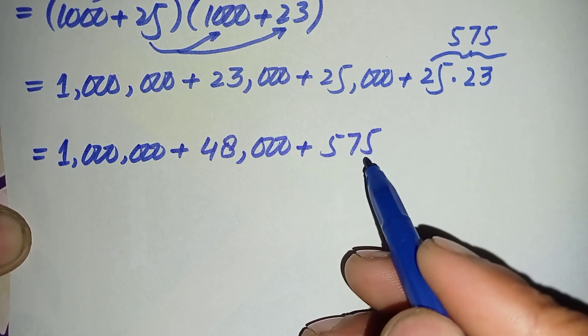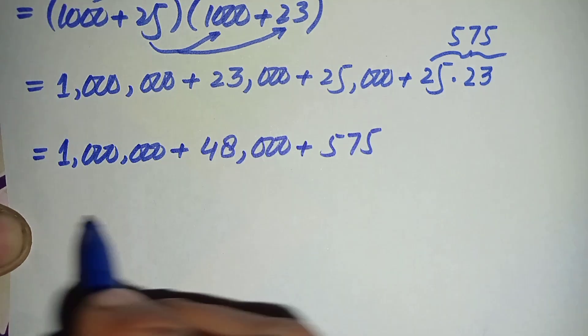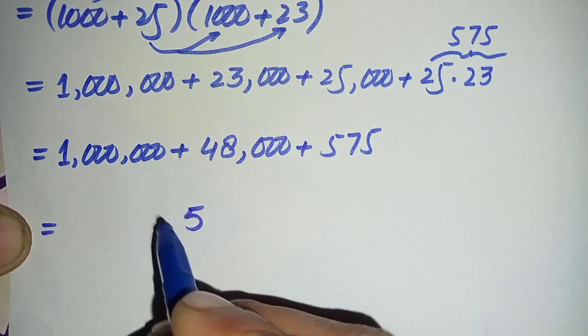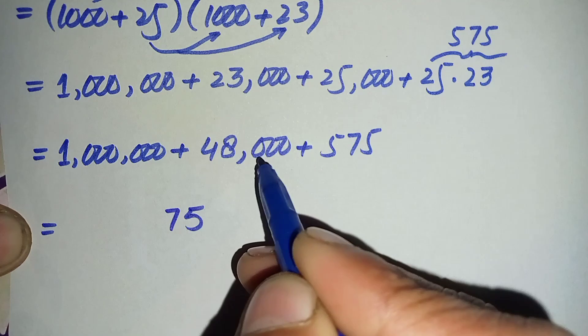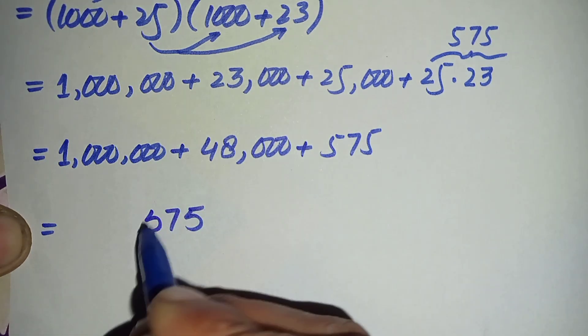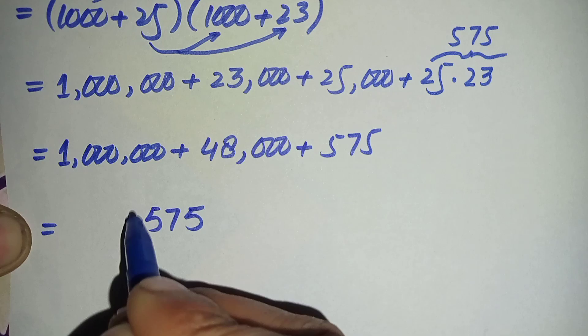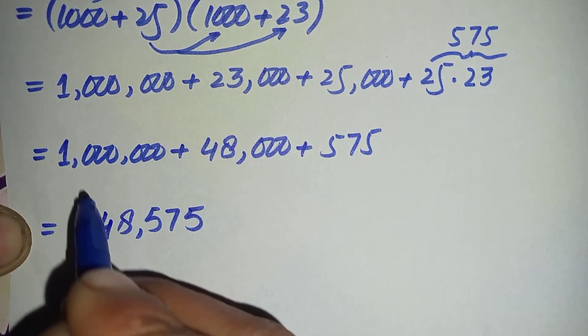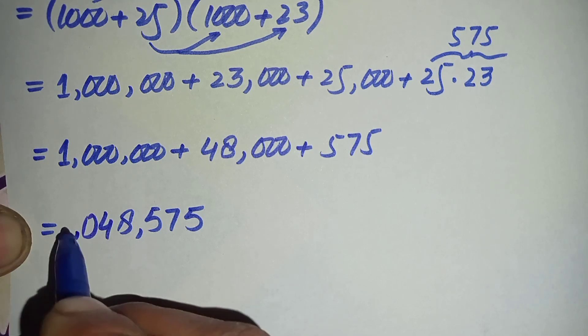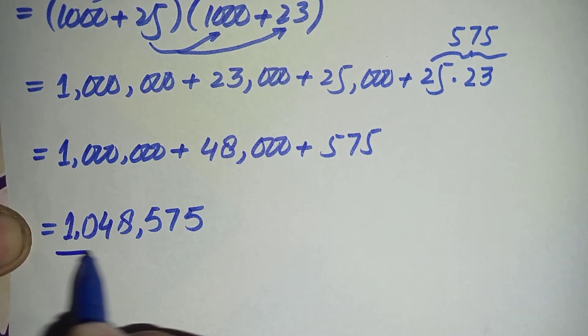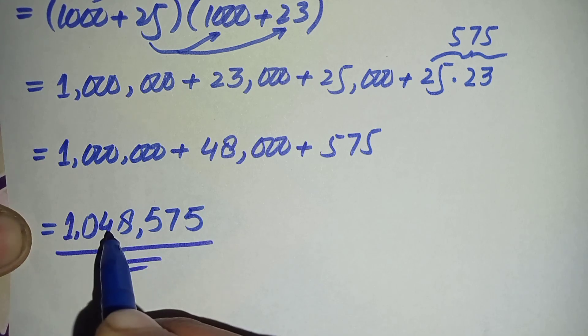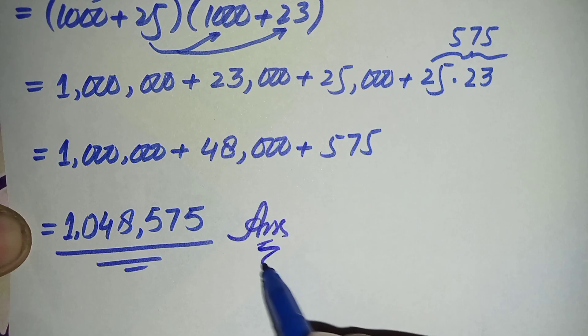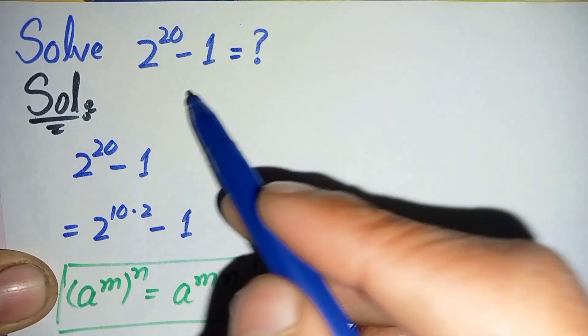8 plus 4 plus 0 is 12, carry the 1. 0 plus 0 plus 1 is 1. So finally, 1 million 48,575 is the answer and value of this nice simplification math problem.